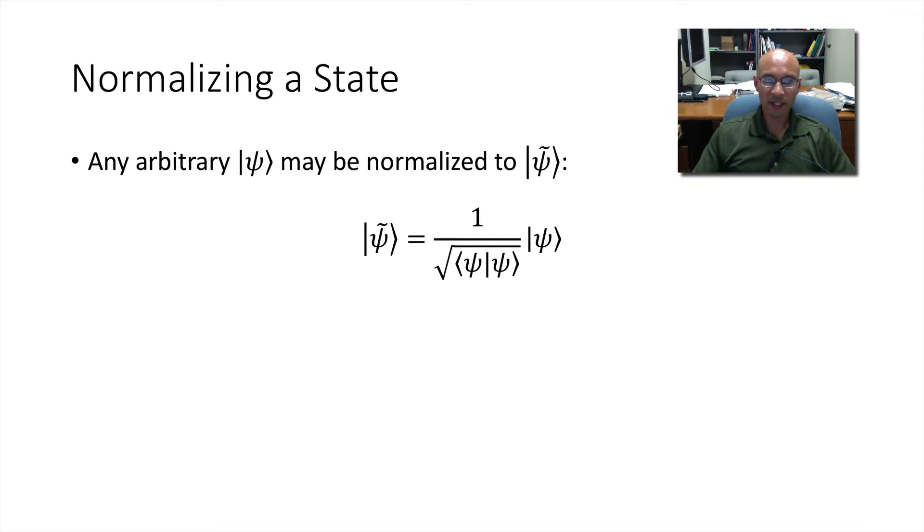Additionally, a state can be made normal, that is, it can be normalized, if we apply this formula. So you take its inner product with itself and square root it. And the reciprocal of that becomes a prefactor for the unnormalized state psi, and you get this normalized psi tilde.